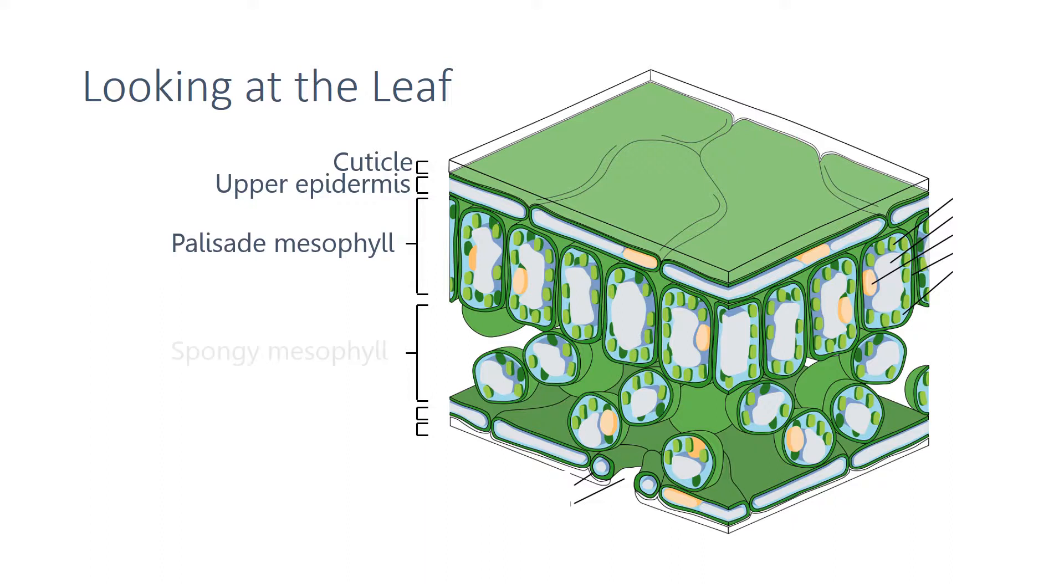The next layer of tissue down is called the spongy mesophyll. This layer contains lots of air spaces and has a large surface area to increase the exchange of gases. The leaf is then sandwiched back with another layer of epidermal tissue.